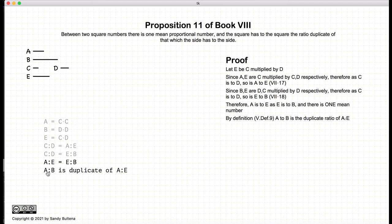Now, we have that a to b is equal to the duplicate ratio of a to e, by definition of what is a duplicate ratio. But a to e is also equal to c to d. So thus, a to b is the duplicate ratio of c to d because these two ratios are the same.